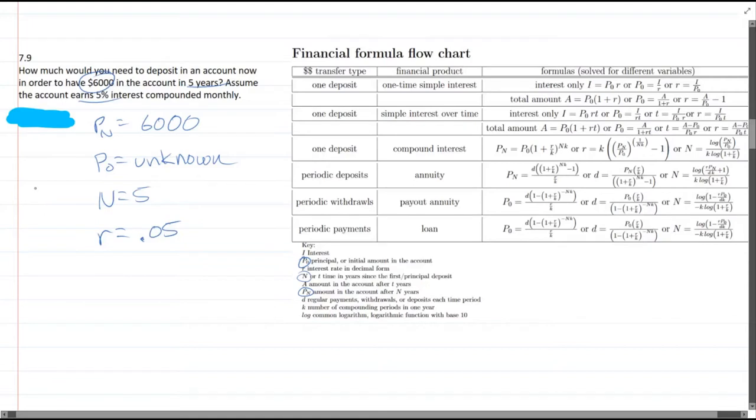Now, compounded monthly, that is the K value. K equals number of compounding periods in one year, which is usually going to be monthly, which is 12, 12 months in a year. K is 12.